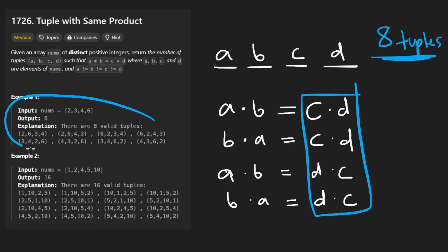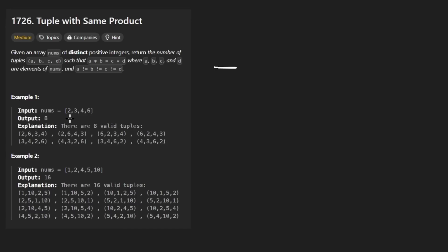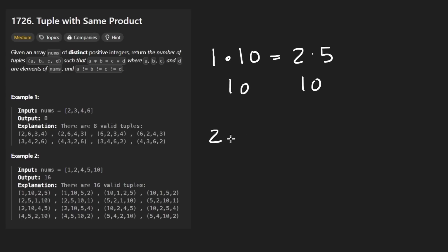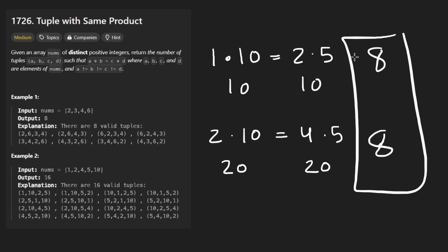That's why in the first example it's not a coincidence that we get eight. In the second example, we find one formula: 1 times 10 equals 2 times 5, each side equal to 10. And a second formula: 2 times 10 equals 4 times 5, each side equal to 20. So this gives eight tuples and that gives eight tuples, ending up with a total of 16 tuples.